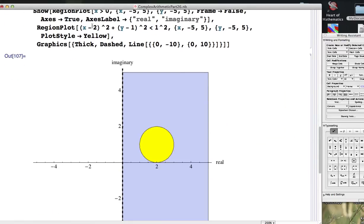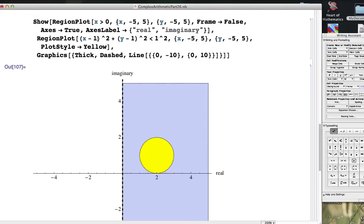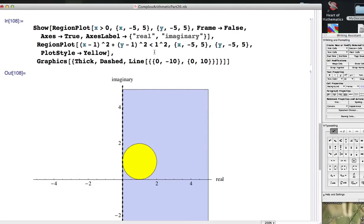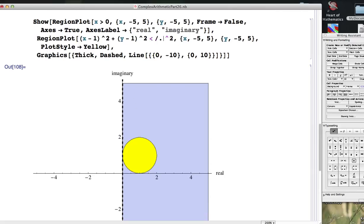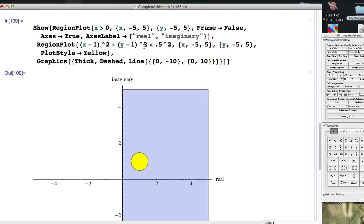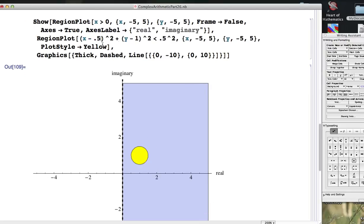If we go closer, say, 1 unit away, technically speaking, that's still, this is an open disk. I haven't made the boundary dash, but it's supposed to be dashed. It's still a subset of the right half plane. If we want to sort of play it safe, we can make it smaller. If we go even closer, we have to make it even smaller to sort of play it safe.